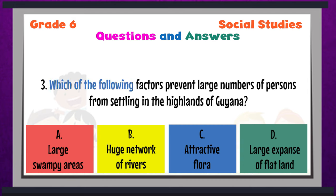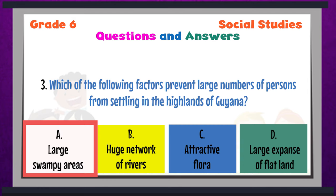Question 3: Which of the following factors prevent large numbers of persons from settling in the highlands of Guyana? A — large swampy areas; B — huge network of rivers; C — attractive flora; or D — large expanse of flat land. The answer to question 3 is A — large swampy areas. Because the highland region experiences heavy rainfall all year round, there are large swampy areas which make it very difficult for the population to be dense. Most persons who live in the highland region are loggers, gold miners, pork knockers, or balata bleeders.